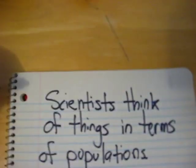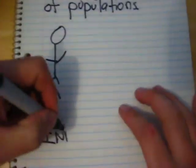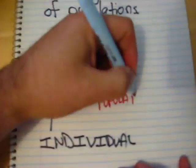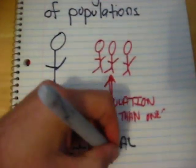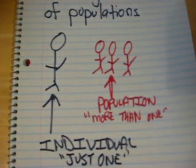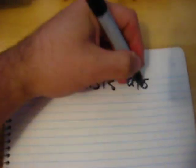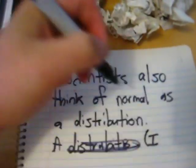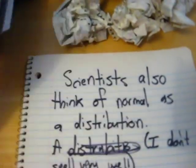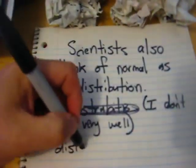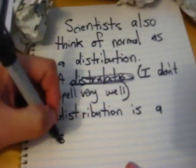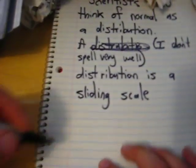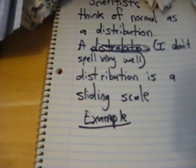Scientists tend to think of these problems in terms of something called populations. You by yourself are an individual; if you have more than one person, you become a population. Scientists look at these populations in terms of all their different characteristics, and as they compare those characteristics, they create what's called a distribution. A distribution is the sliding scale of science — it starts on one end and goes to the other.